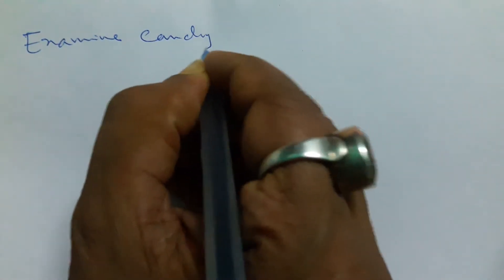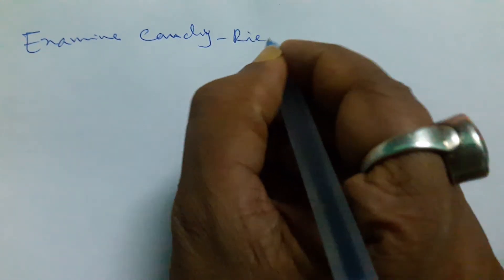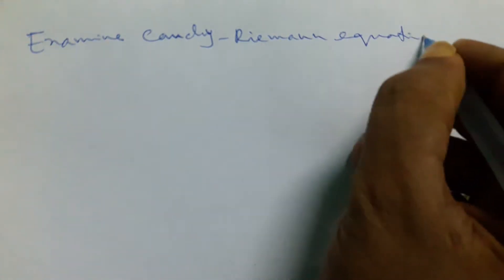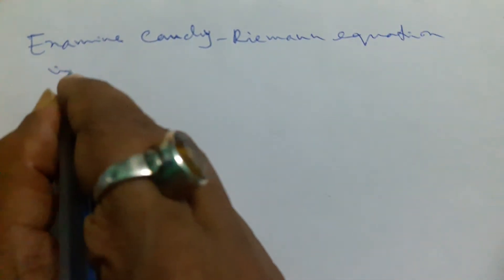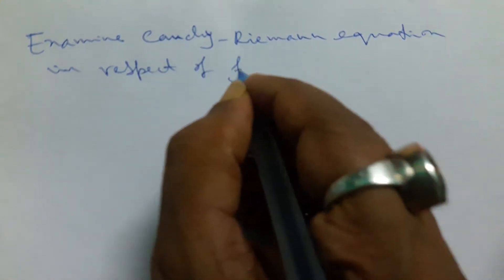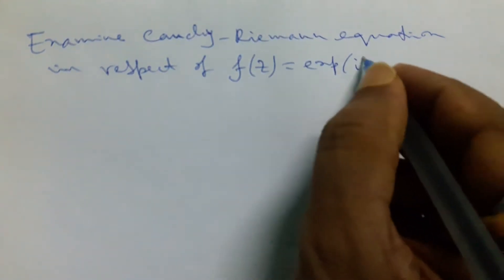Welcome to the viewers. Now we examine the Cauchy-Riemann equation of a function. Examine the Cauchy-Riemann equation in respect of f(z) = e^(iz̄).